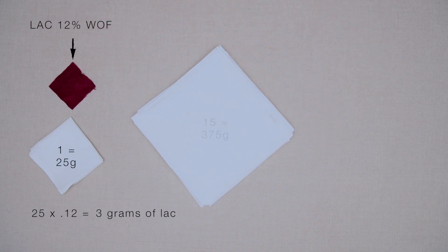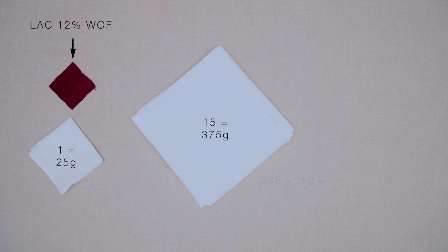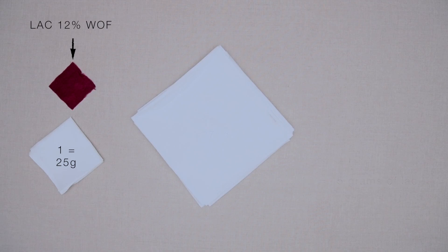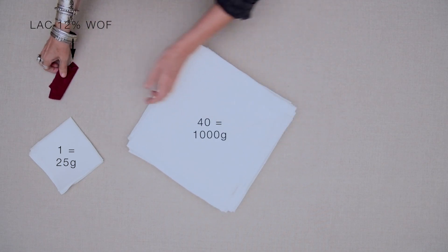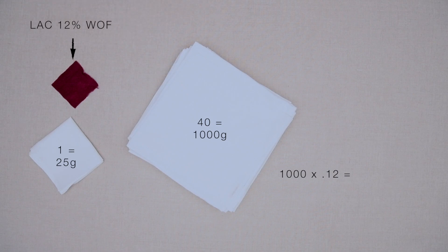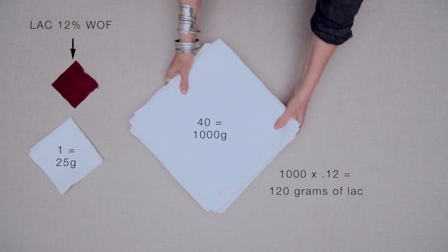If I want to dye 15 bandanas, I weigh them and find they weigh 375 grams. 375 grams times 0.12 equals 45 grams of lac — I need 45 grams of lac to dye 15 bandanas. And if I want to dye 40, the weight of 40 cotton bandanas is a kilo: 1,000 grams times 0.12 equals 120 grams of lac.